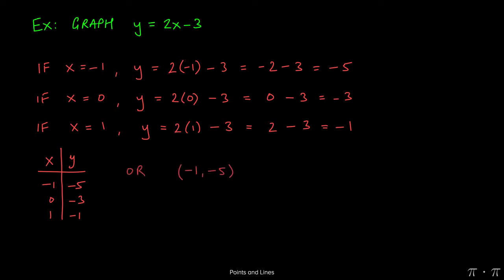A third way of representing the information is by way of ordered pairs. So you can write it in the form of x comma y. Negative 1 comma negative 5 is the first point, 0 comma negative 3 is the second, and 1 comma negative 1 is the third way of representing the three points on this line.